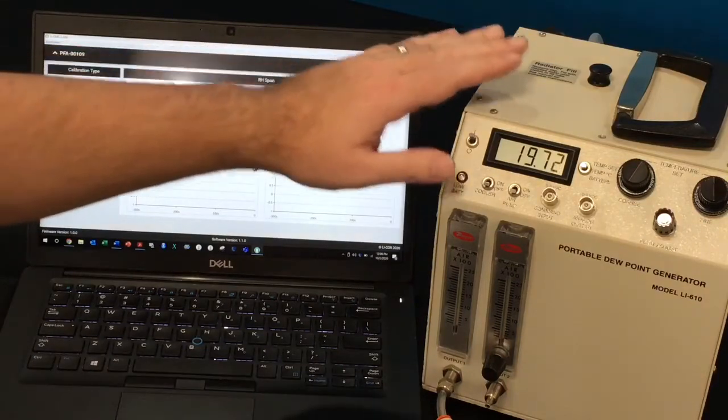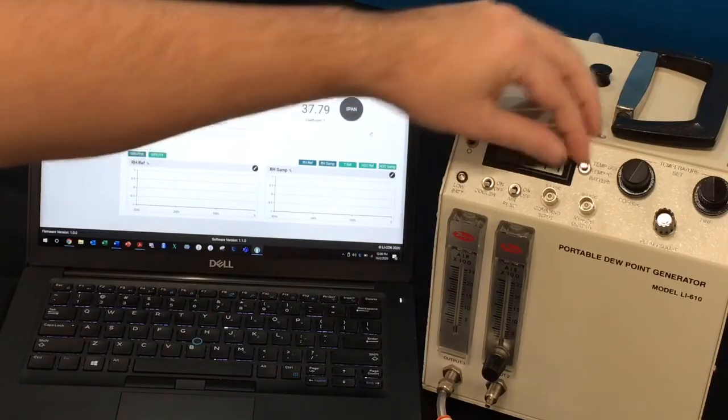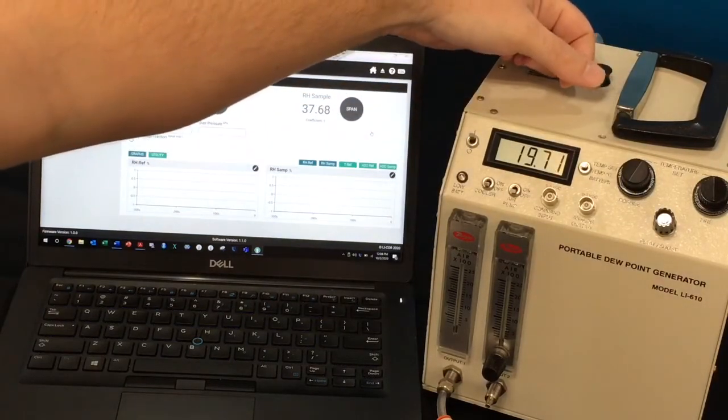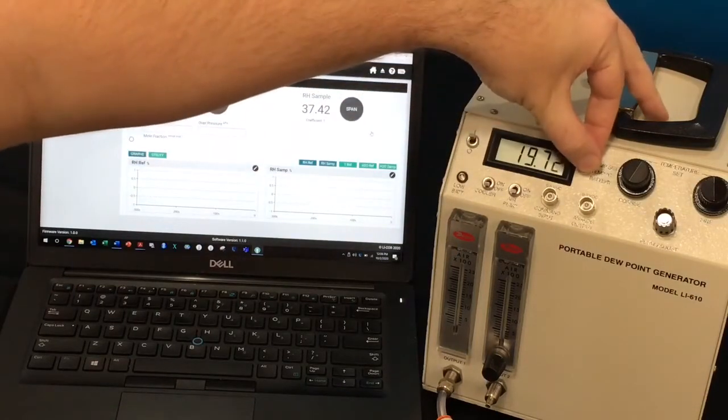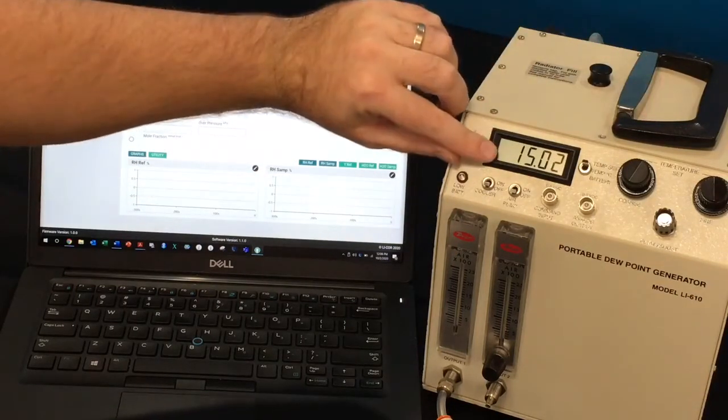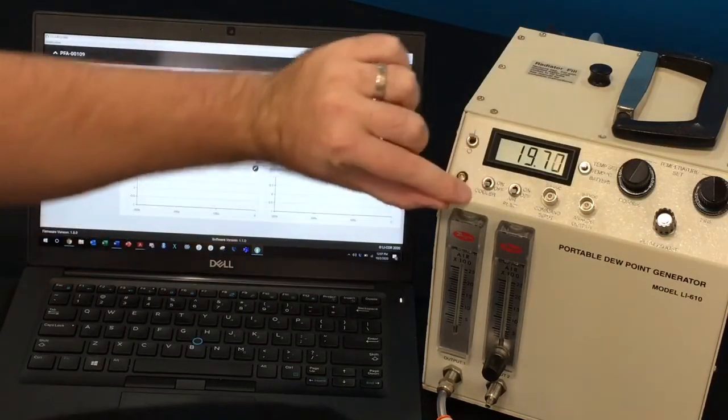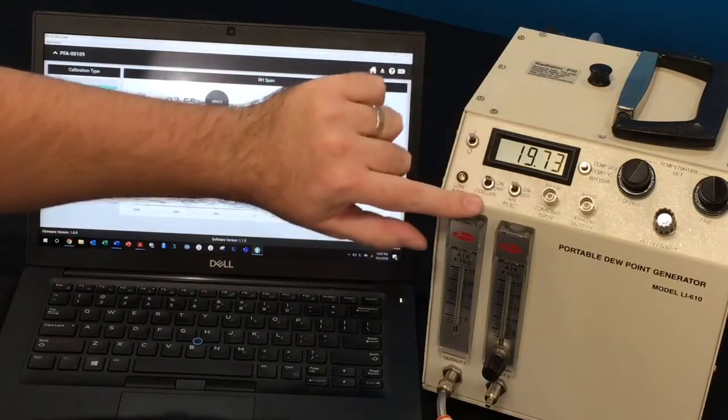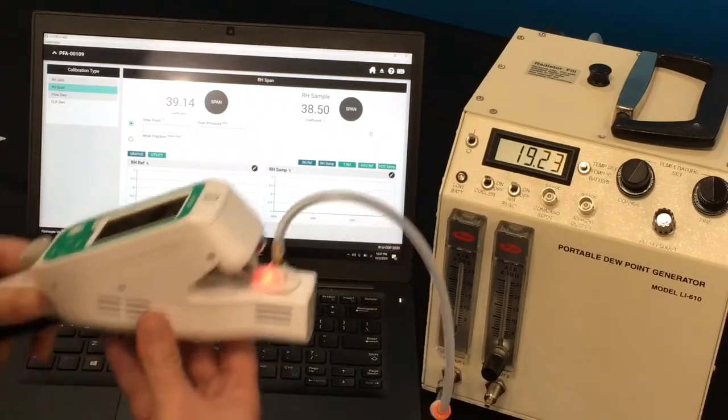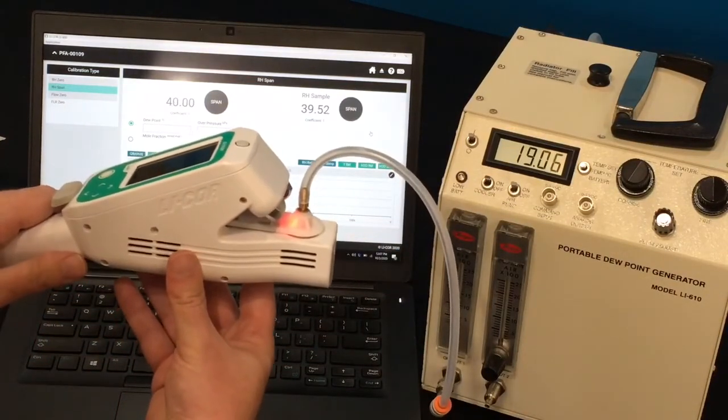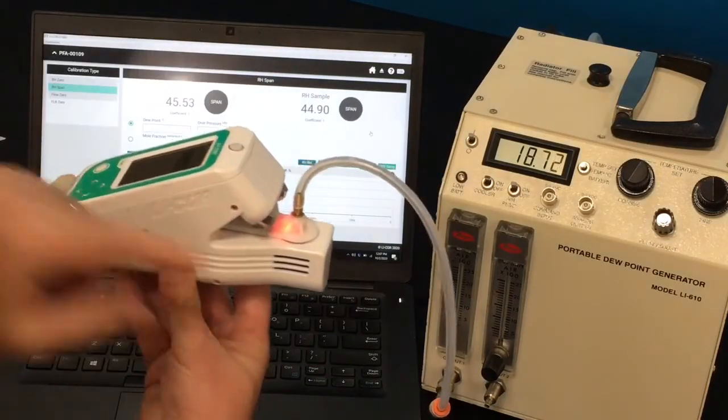Now we'll want to turn on our LI-610 dew point generator, set our temperature to something slightly lower than ambient. So right now my instrument is at 19.7 degrees, but my set point is at 15 degrees. And we will now turn the cooler and the air pump on. And now we are flowing an airstream with a known water vapor concentration into the LI-600 through its calibration clamp.